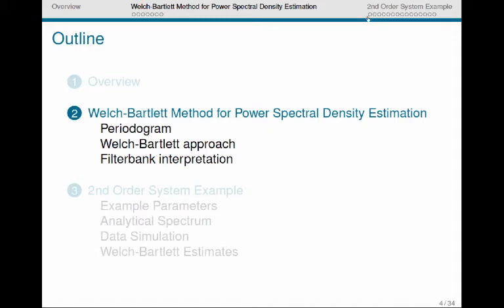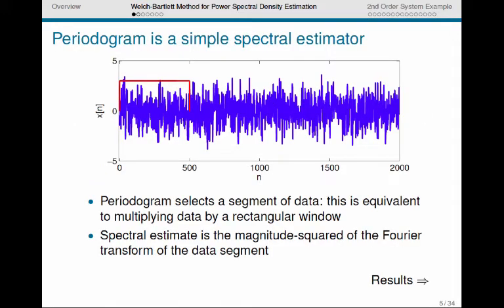We start first with a brief discussion of the periodogram. The periodogram is a simple spectral estimator. It takes a segment of data, here indicated by the red rectangle, and then the spectral estimate for that data is just the magnitude squared of the Fourier transform of that data segment.